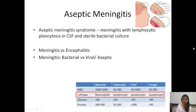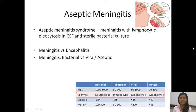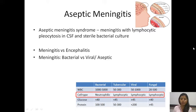You must have heard the term aseptic meningitis. It is kind of an older term, but it generally signifies meningitis where other common causes of meningitis have not been found. It is characterized by lymphocytic pleocytosis — the number of lymphocytes increases in CSF — and the bacterial culture is generally sterile.